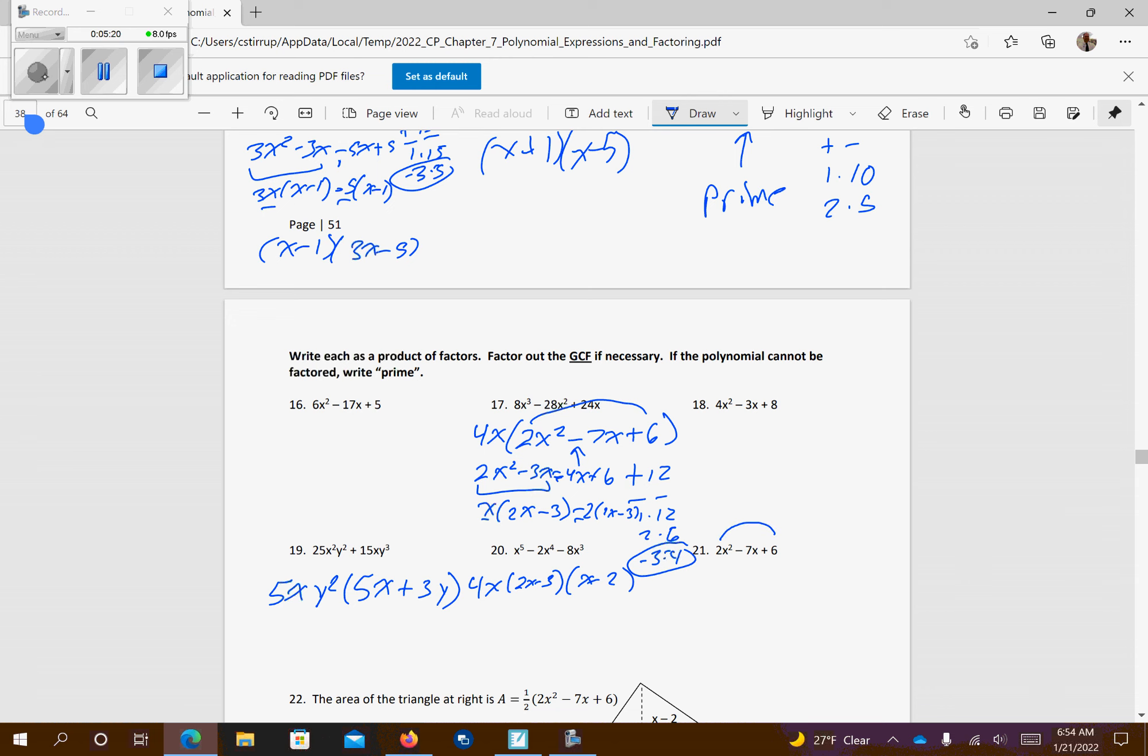This one, I'm going to multiply those together. So I got a positive 12. I know that the signs both have to be negative because I have a negative 7. So I have 1 times 12, 2 and 6, 3 and 4. Both being negative 3 and 4, I'm going to add it to the 7. So I get minus 3x minus 4x plus 6. I have a x in common. So I'm going to get 2x minus 3. I can factor a negative 2. That's going to give me 2x minus 3. So I get 2x minus 3 and x minus 2.